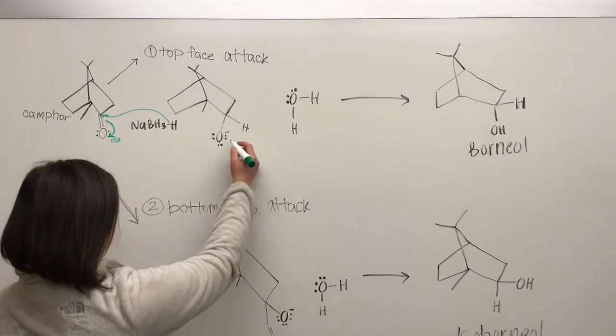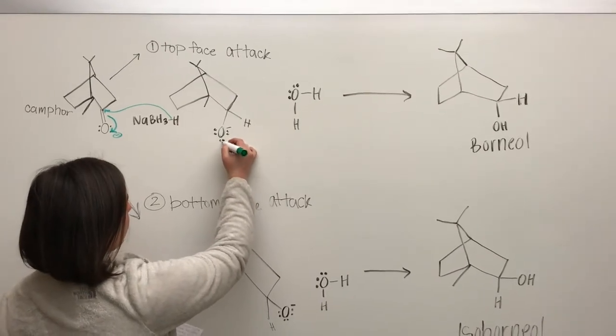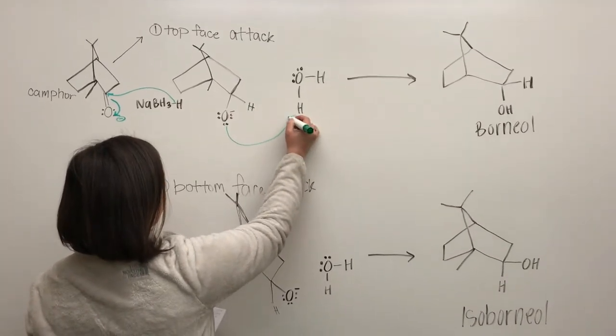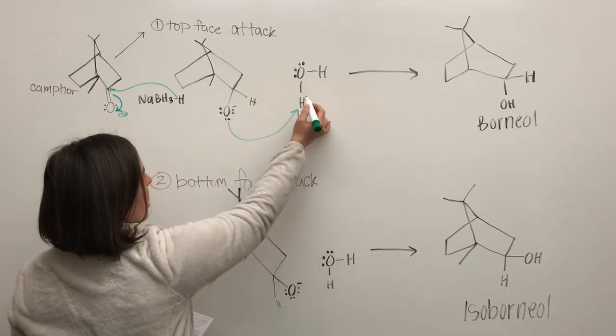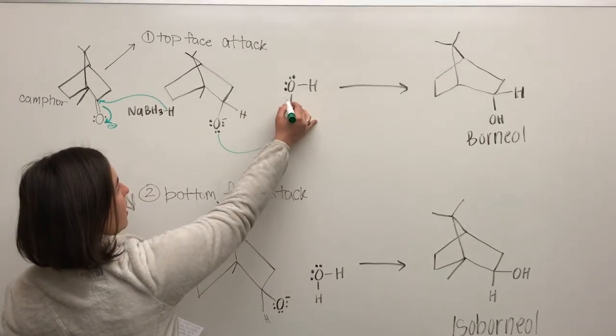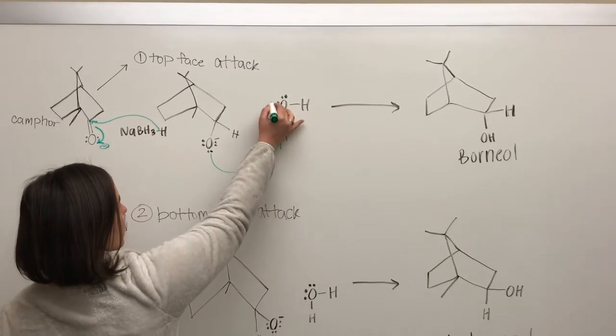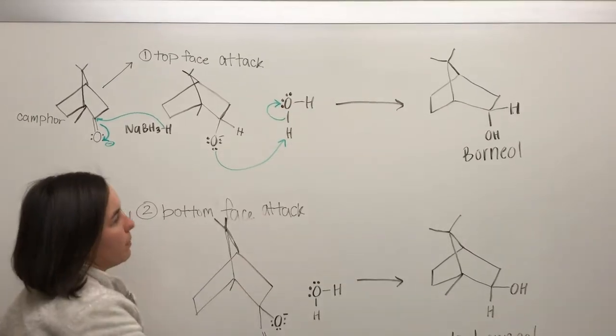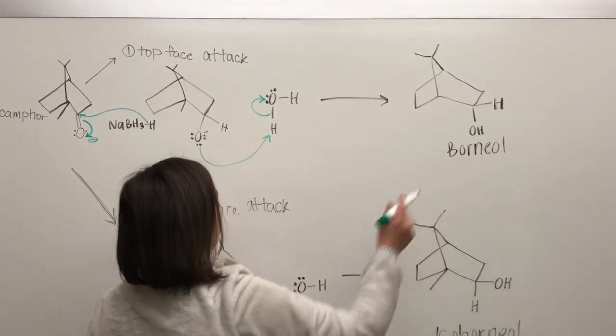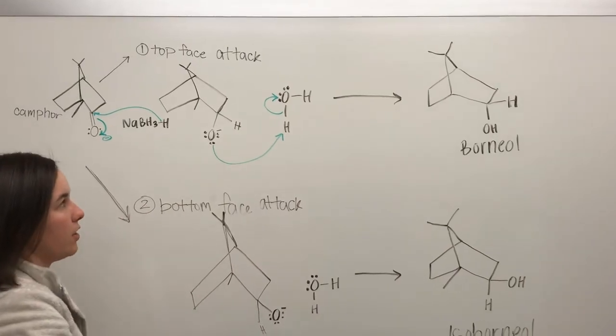Then the negatively charged oxygen that we've created is going to attack the water molecule, abstracting a hydrogen and the electrons from this bond are going to be transferred to this oxygen which creates our product borneol and then we also create a hydroxide group.